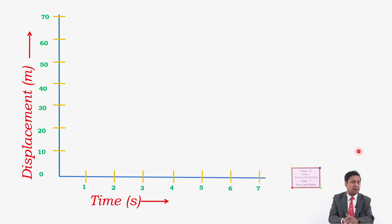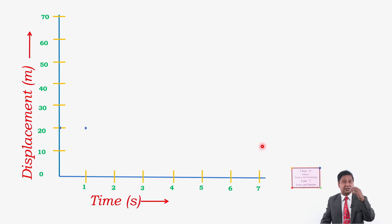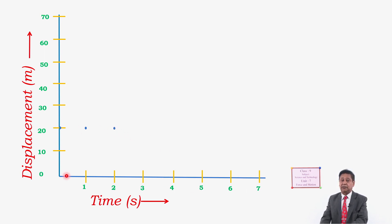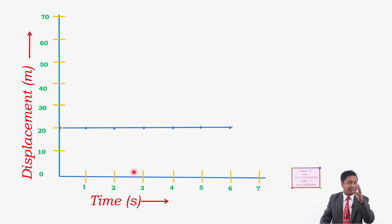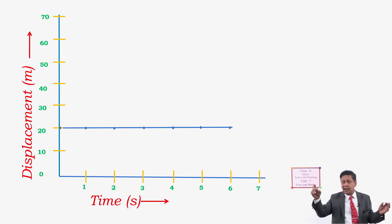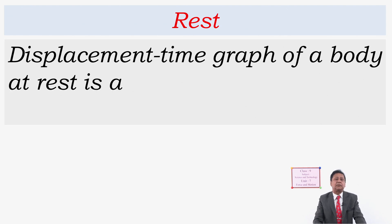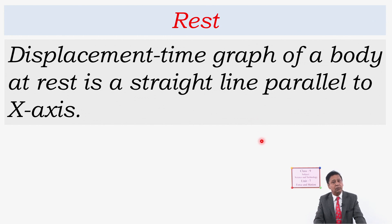Now let's look at another type of motion. If a body is at a displacement of 20 meters from the reference point and remains at the same place after each second, we mark those points. When we join them we get a straight line parallel to the x-axis. The displacement-time graph of a body at rest is a straight line parallel to the x-axis.